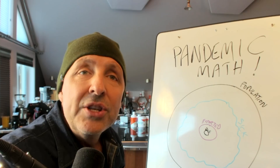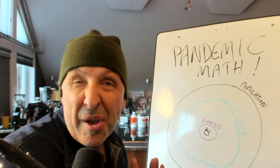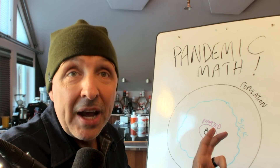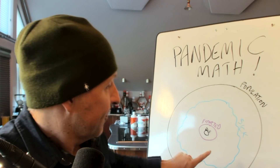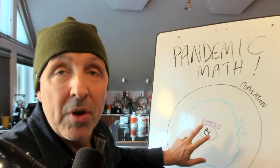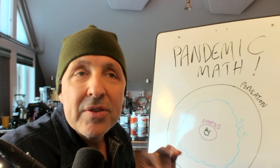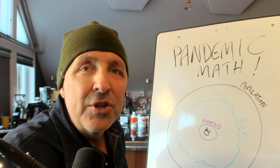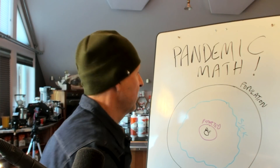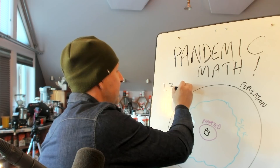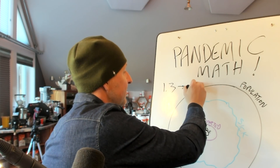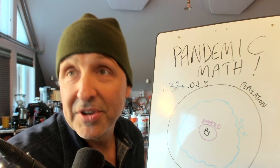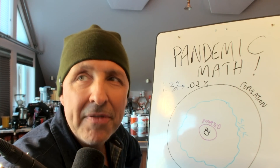Do you remember the H1N1 swine flu? In 2009, we all lost our minds when the WHO said the mortality rate was 1 to 1.3%, since they only knew how many people died and the number who got sick and self-reported — two numbers. But four years later, when they had all the data, the WHO revised the mortality rate from 1.3% down to 0.02% — reducing it by 65 times.